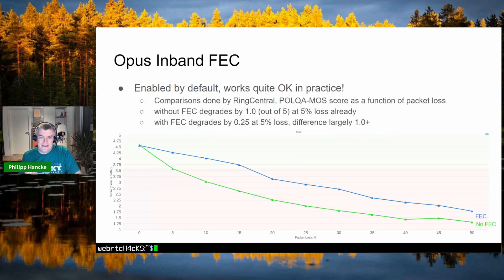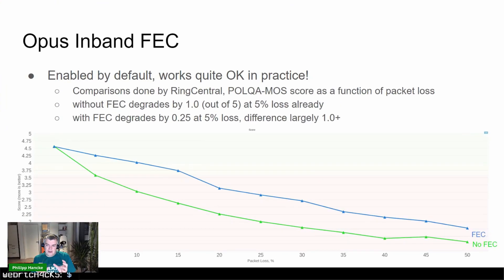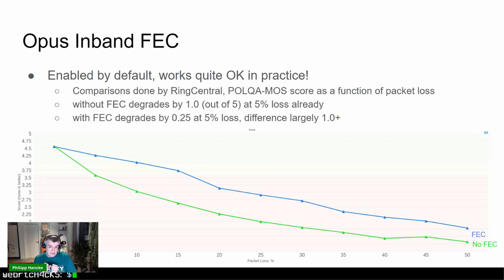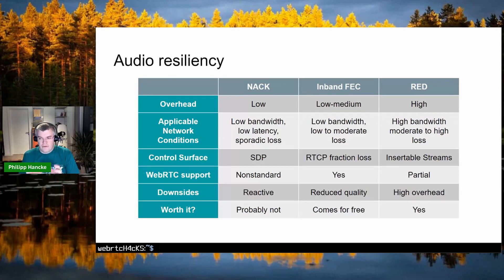Measurements done by RingCentral while evaluating RED showed POLQA MOS scores as a function of packet loss. Without Opus inband FEC, quality degrades by a score of 1.0 out of 5 at just 5% loss — that's quite bad. With inband FEC, degradation is much more linear: only 0.25 at 5% loss. That's a significant difference in MOS score, and it's what every WebRTC call uses by default.